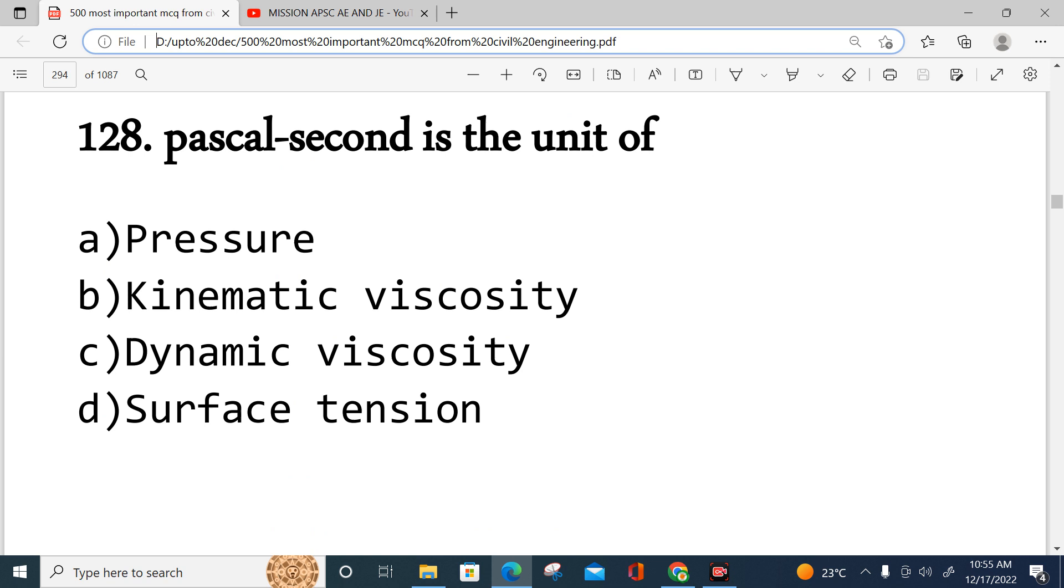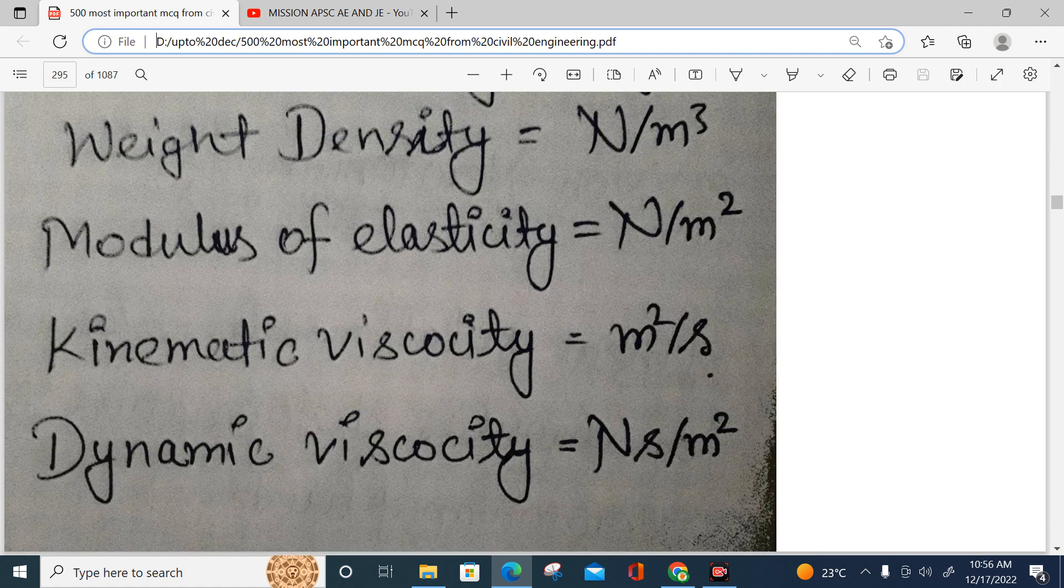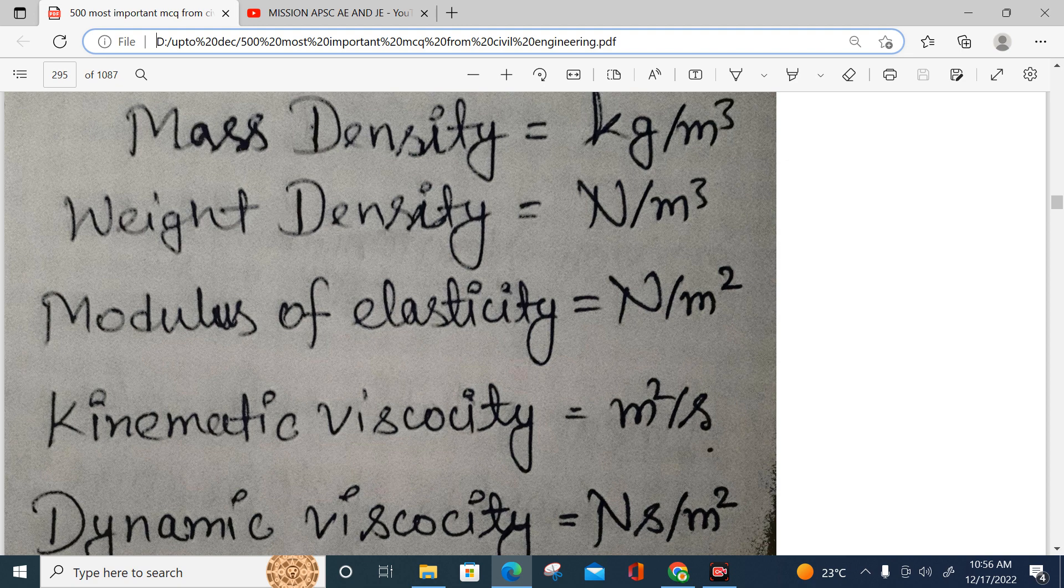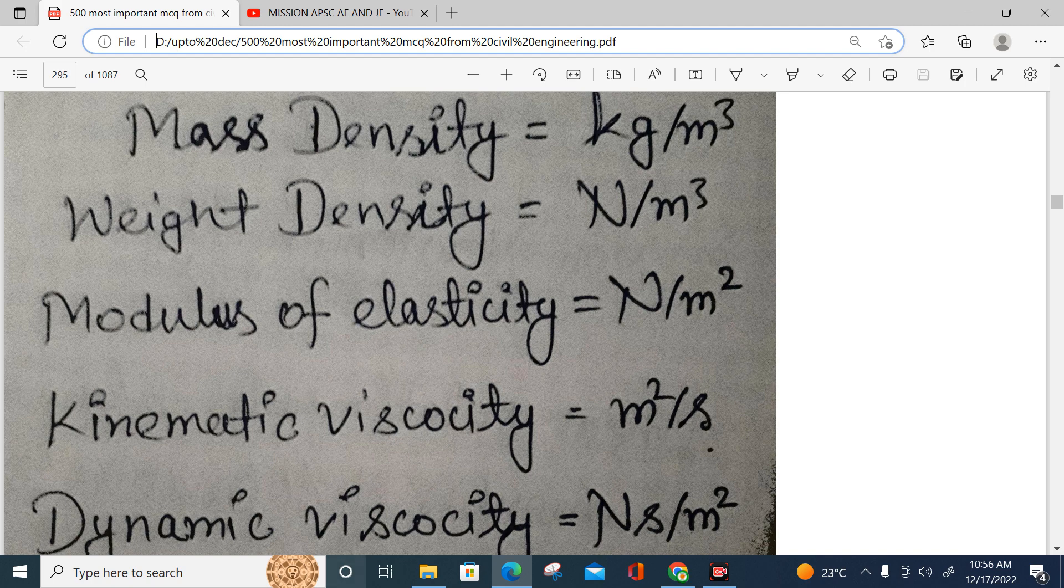Question 128: Pascal-second is the unit of - pressure, kinematic viscosity, dynamic viscosity, or surface tension. Pressure is Newton per meter square, right? Surface tension is Newton per meter, force per length. This is about kinematic viscosity and dynamic viscosity. Mainly the normal viscosity is dynamic viscosity. Mainly mass density is kg per meter, weight density is Newton per meter, modulus of elasticity is Newton per meter square.